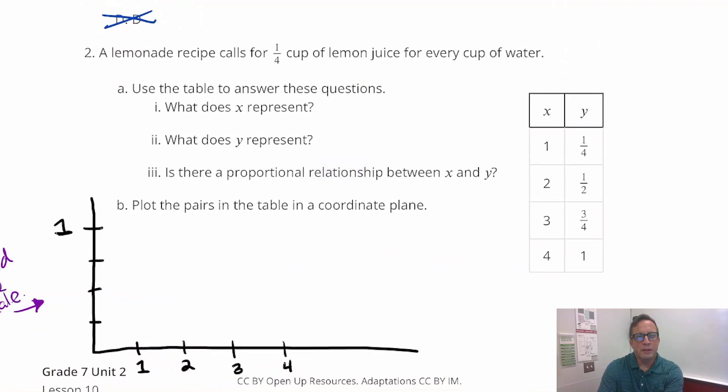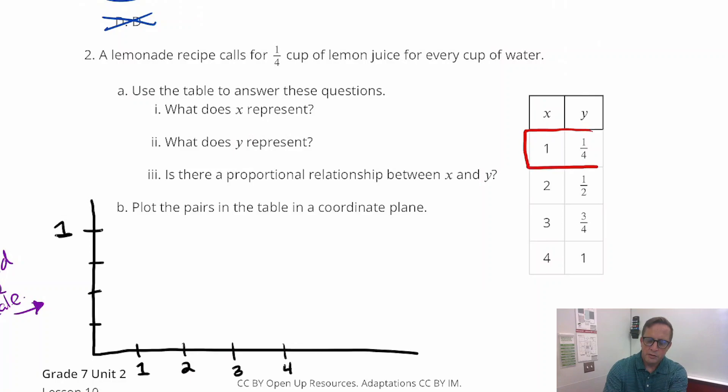For number 2, a lemonade recipe calls for one-fourth cup of lemon juice for every cup of water. Use the table to answer these questions. What does X represent? Well, if I'm looking at the graph, that has the proportionality right there. What does X represent? Well that's got to be water, cups of water, because it says in the description that it needs a cup of water. And then this has to be the Y, the lemon juice.